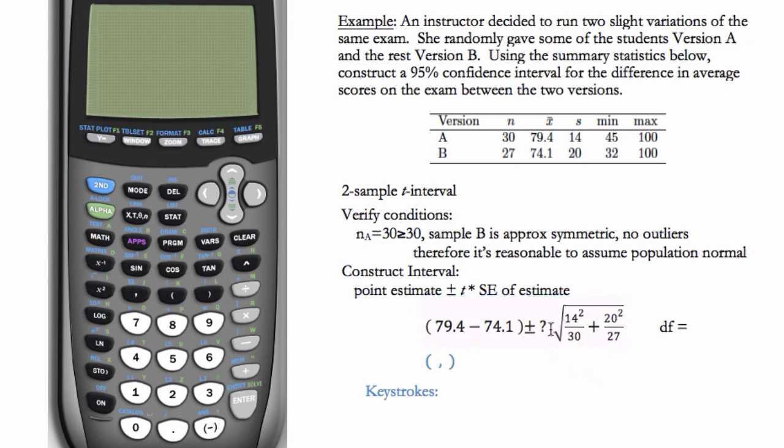So we're just missing T star now. So now we'll have to use the calculator to evaluate the interval and also to find the degrees of freedom. Here, there is not really a simple formula for the degrees of freedom when there's a two-sample T interval. So we'll just use the calculator.